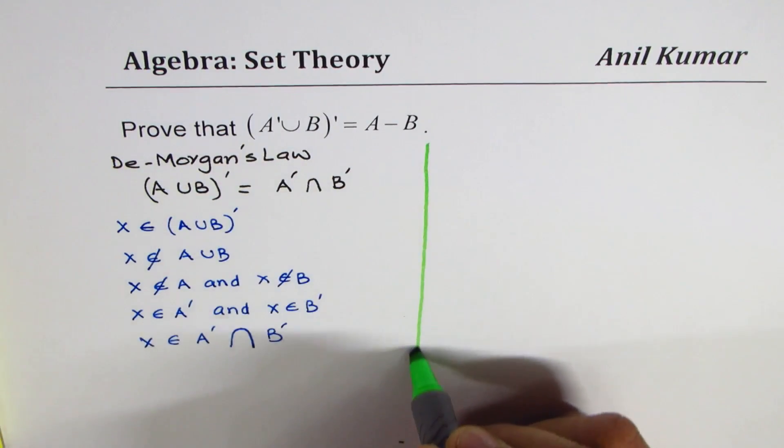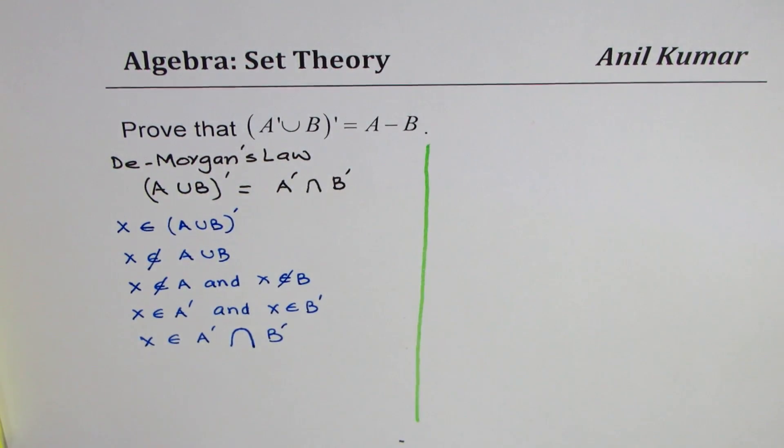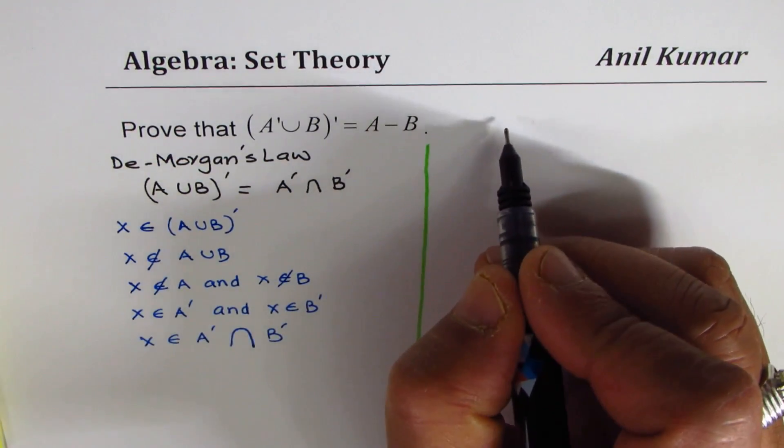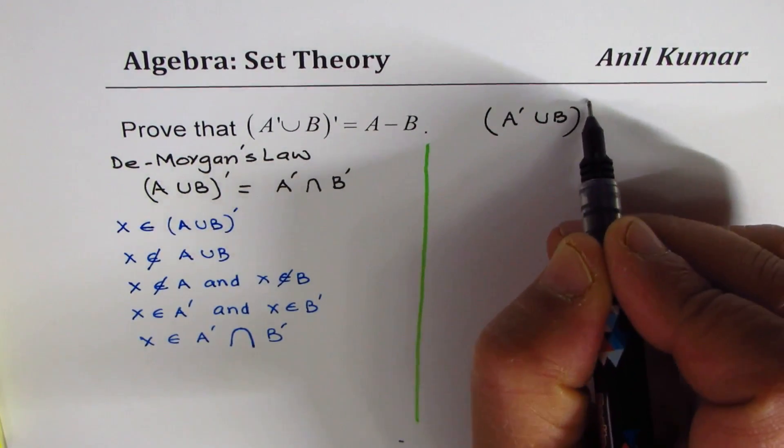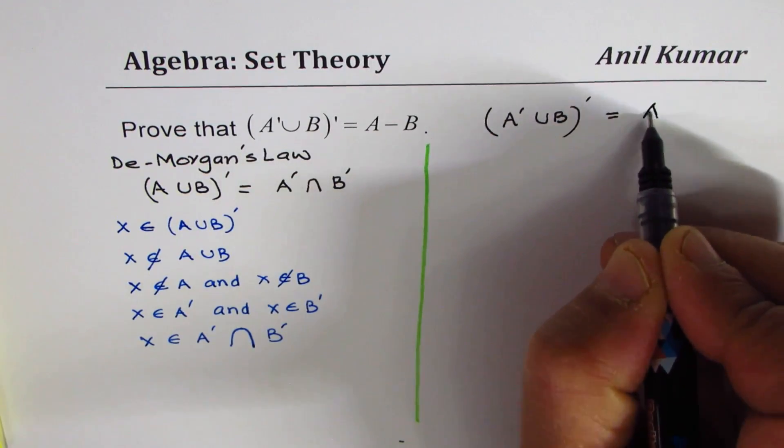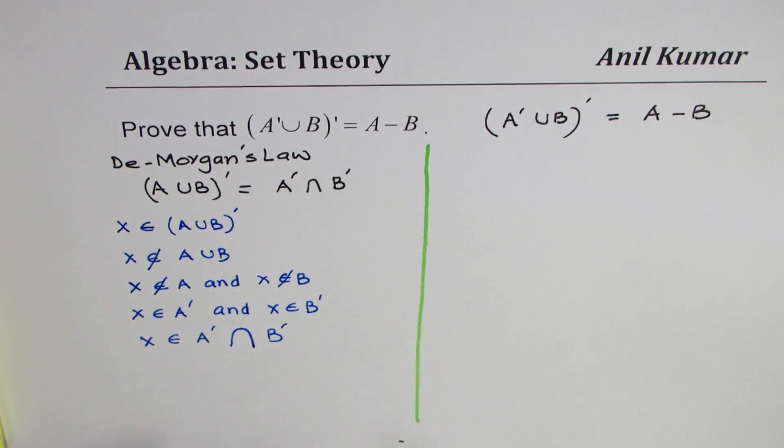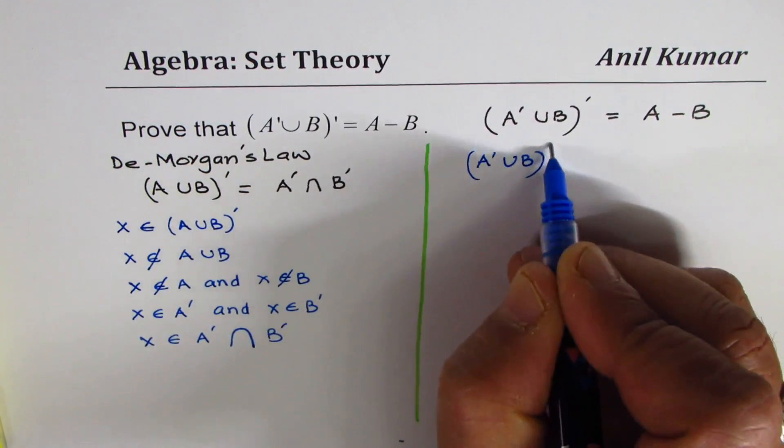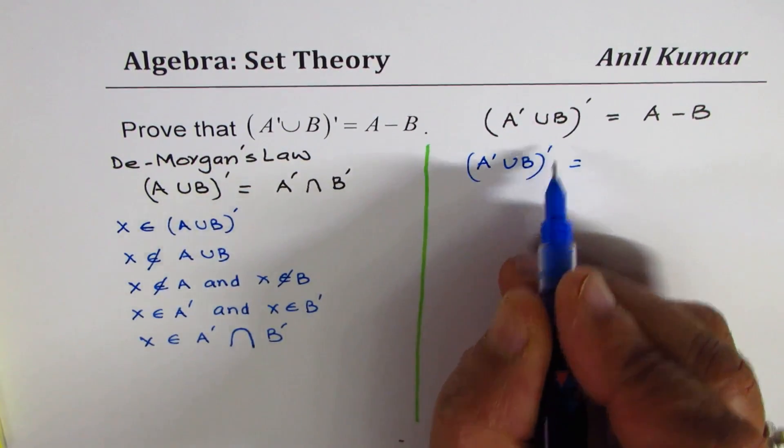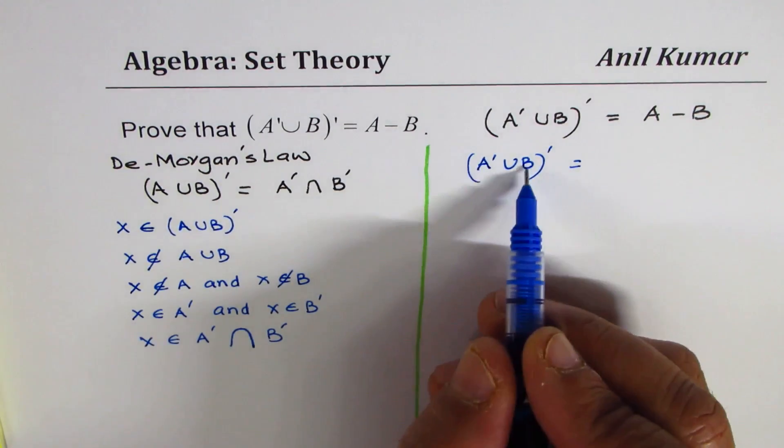So that is what the law is. Now we'll use this law to prove the identity you want. Let's begin with the identity which equals A minus B. We are now converting this to minus. So we'll use the law, De Morgan's Law.